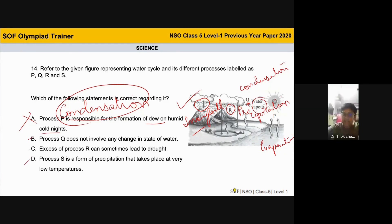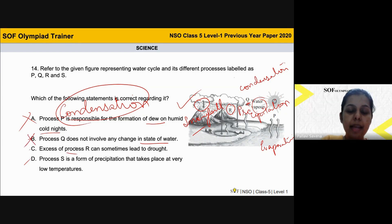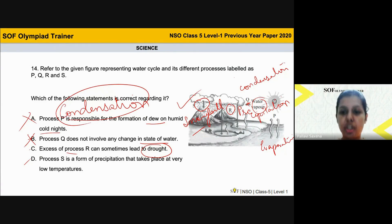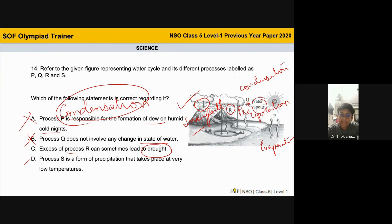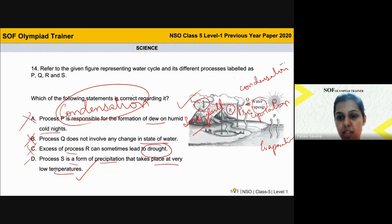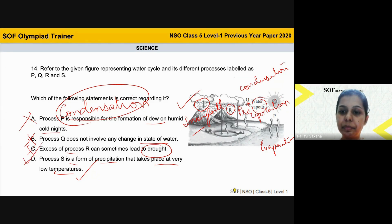Statement B is false because process Q involves condensation, which changes water into a different state. Statement C says process R can sometimes lead to drought — but drought is extreme dry conditions caused by lack of rainfall, and R is precipitation with a lot of rainfall, so statement C is also wrong. Statement D says process S — snowfall — takes place at very low temperatures, which is correct. That is why option D is the correct answer.